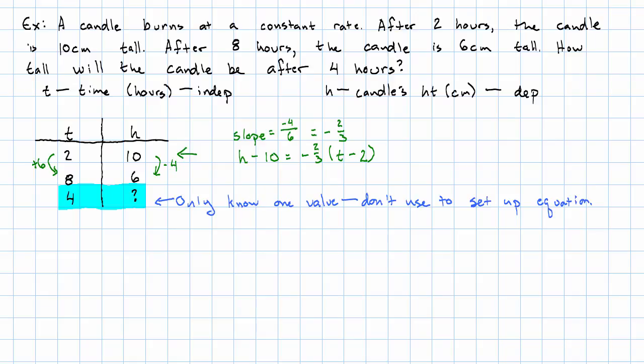Okay. Now that we have our equation, we can use our equation to answer the question. So, let's see. H is what we want to find out. T is four. So, we have H minus 10 is negative two-thirds times two. That's negative four-thirds. We'll add 10 to both sides and get H is 10 minus four-thirds.